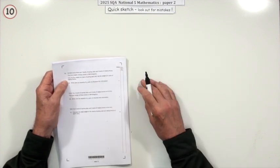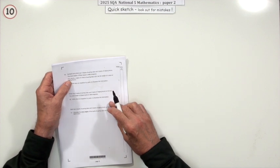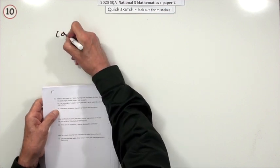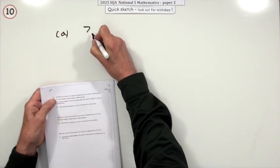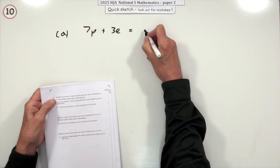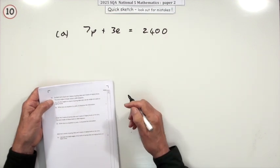The total weight is 2,400 kilograms. You don't need to explain what the variables are. Let p be the weight of a stack of paving slabs and e be the weight of edging blocks, all in kilograms. So you just translate that. Seven paving slabs, three edging blocks, total 2,400.